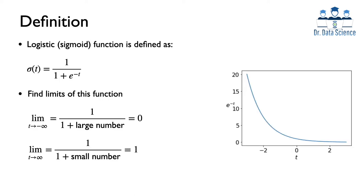Let's take a closer look at the behavior of the logistic or sigmoid function at the two extreme values of negative infinity and positive infinity. When t goes to negative infinity, e to the negative t goes to infinity, so we get 1 over 1 plus a large number, which converges to 0. When t goes to positive infinity, e to the negative t is very close to 0, giving us 1 over 1 plus a small number, which is essentially 1 over 1, so the limit is 1.